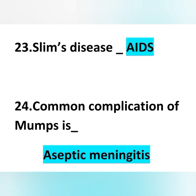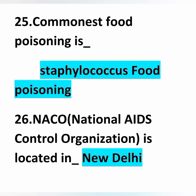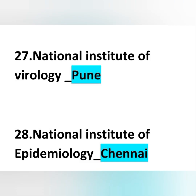Slim's disease is AIDS. One of the most common complications of mumps is aseptic meningitis. The most common type of food poisoning is Staphylococcus food poisoning. NACO — the National Institute of AIDS Control Organization — is situated at New Delhi.